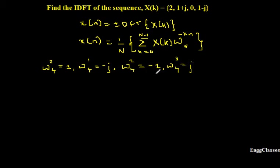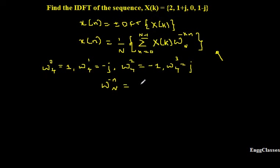Next the task is to find the negative twiddle factors. Looking at the given formula, we need the negative form. To find W4 to the power minus 0, minus 1, minus 2, minus 3 is important. The result is: W4 to the power minus N is equal to W_N to the power N star, where star indicates the complex conjugate.